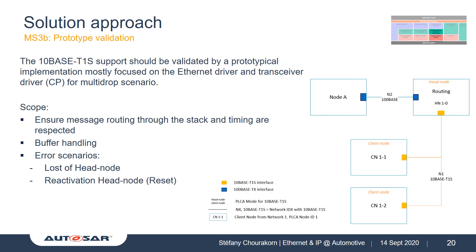For the current validation phase, we plan to use a setup connecting the classical point-to-point connection to a multidrop segment. We want to ensure that specific automotive messages are routed through the stack and timings are respected. We also want to validate our buffer handling proposal, and we will test some error scenarios around head node failures and eventual resets. This activity will take place until the end of the year.